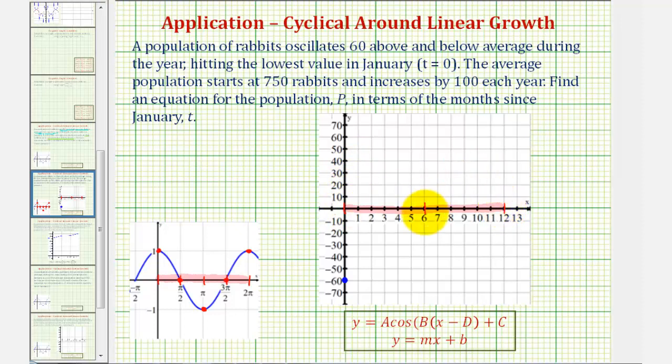So from zero to 12 is the period. Divide this in half, and then in half again. And now we can follow a similar pattern as the basic cosine function, except we have a reflection across the x-axis. So we'll go from a minimum to the midline, to a maximum of 60, back to the midline, and then back to a minimum. So the graph of the oscillation part of our equation would look something like this.